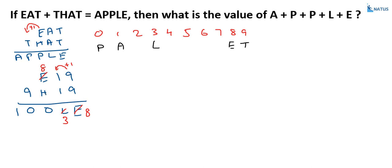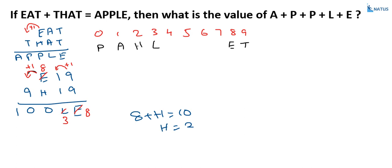Now, come to this part. E plus H is equal to 0, and there is no carry over from here because 1 plus 1 plus 1 equals 3 with no carry. So, 8 plus H is equal to 0. The value of H must be equal to 2, because there is 1 carry from the previous column. So, 8 plus H equals 10, meaning H is equal to 2. So, 2 is allocated to H.